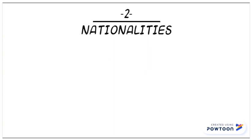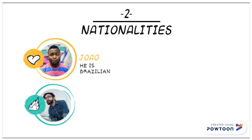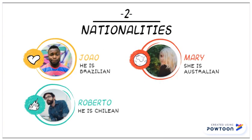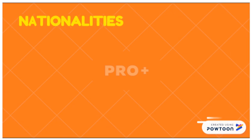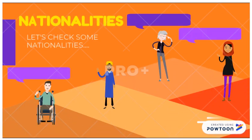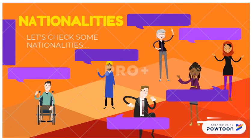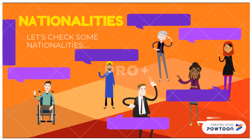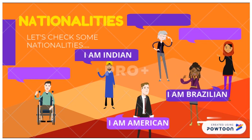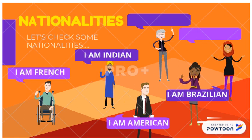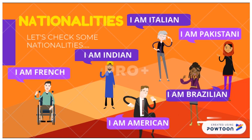Very good job, class! Now let's continue with nationality examples. Joao — he's Brazilian. Mary — she's Australian. Check these examples: Brazilian, American, Indian, French, Pakistani, and Italian.